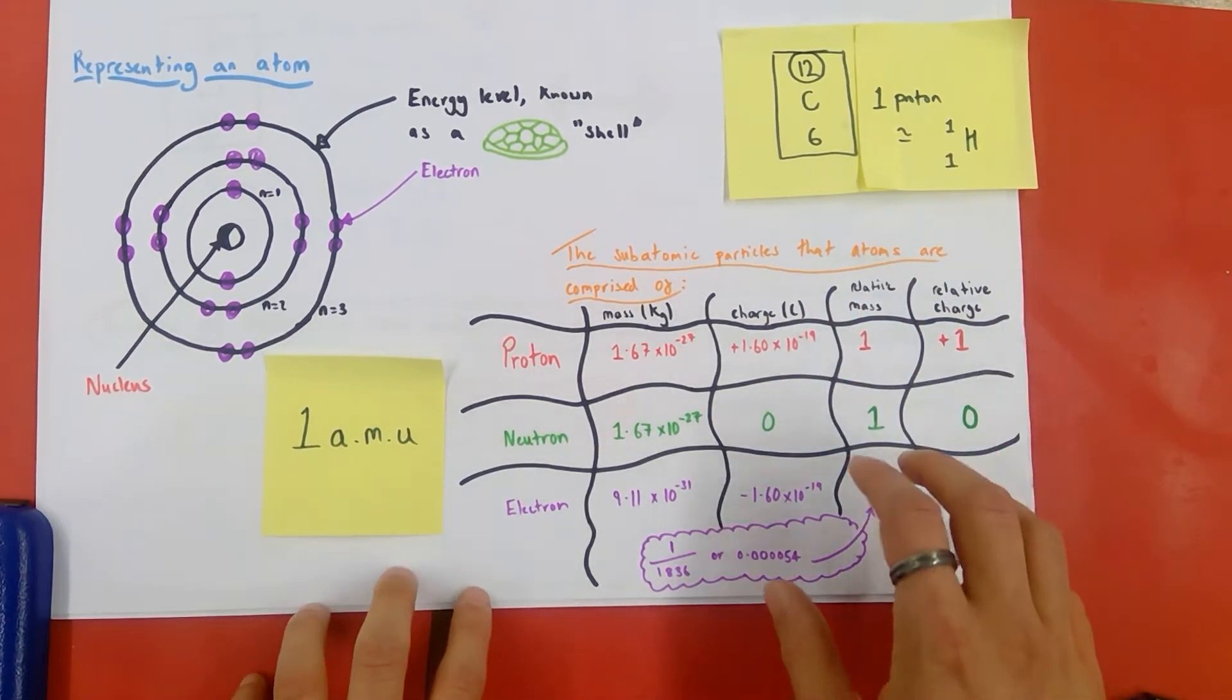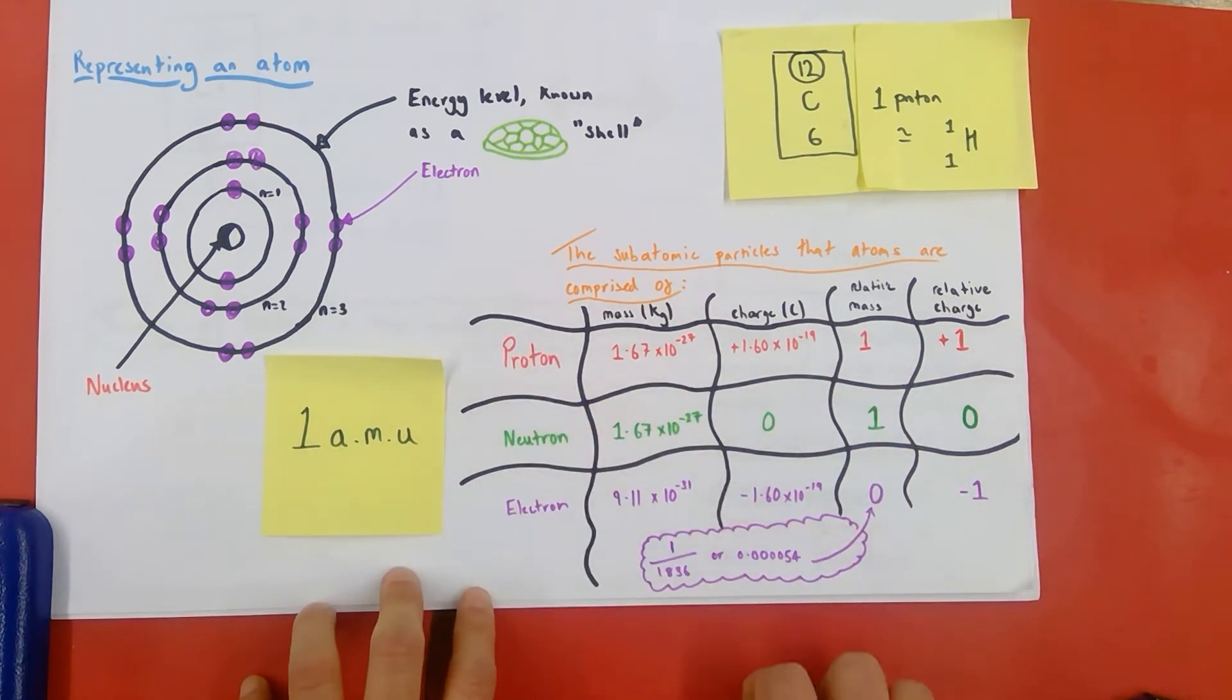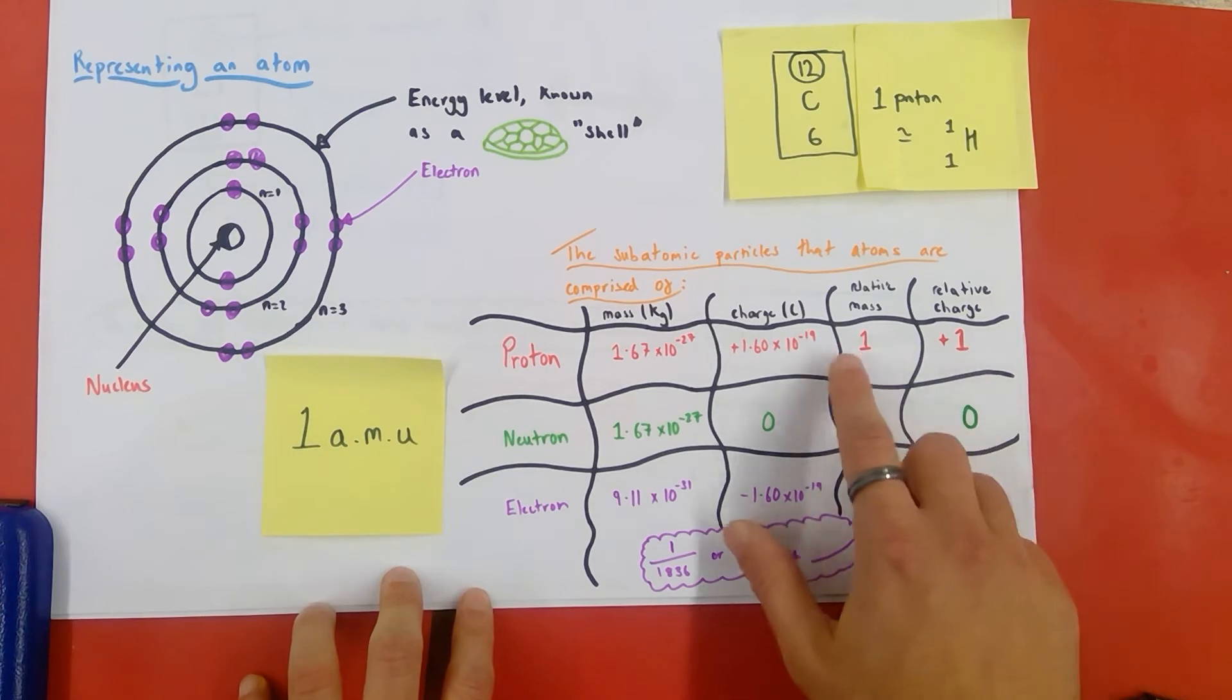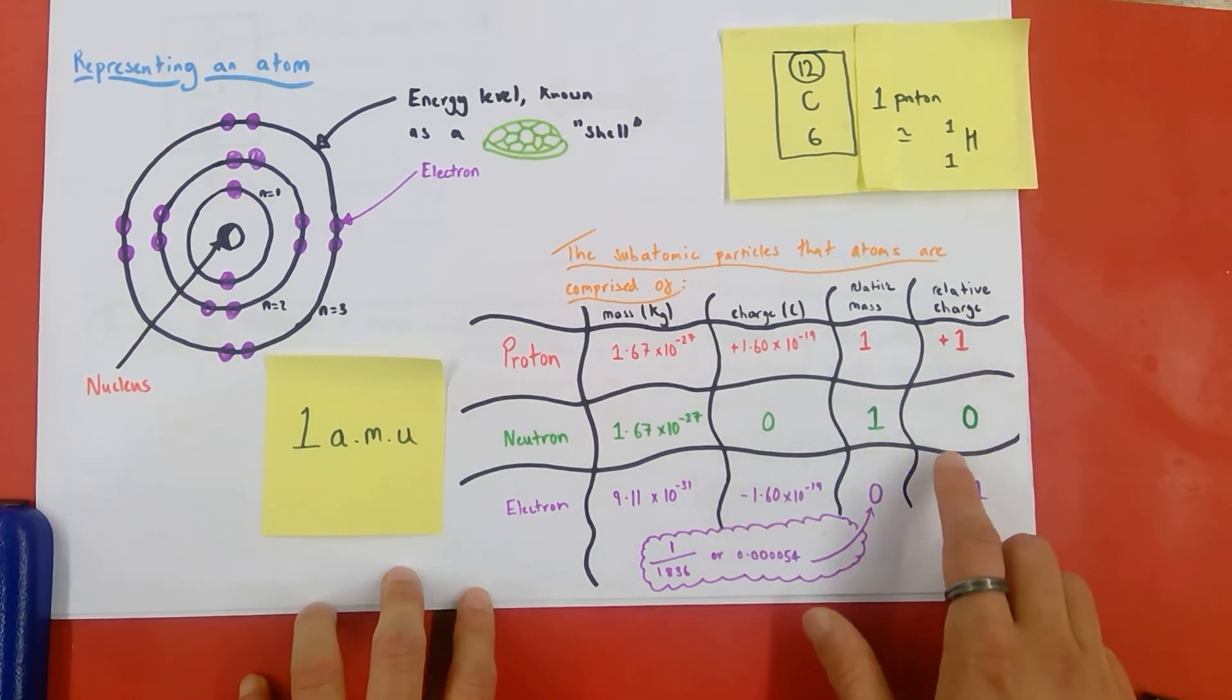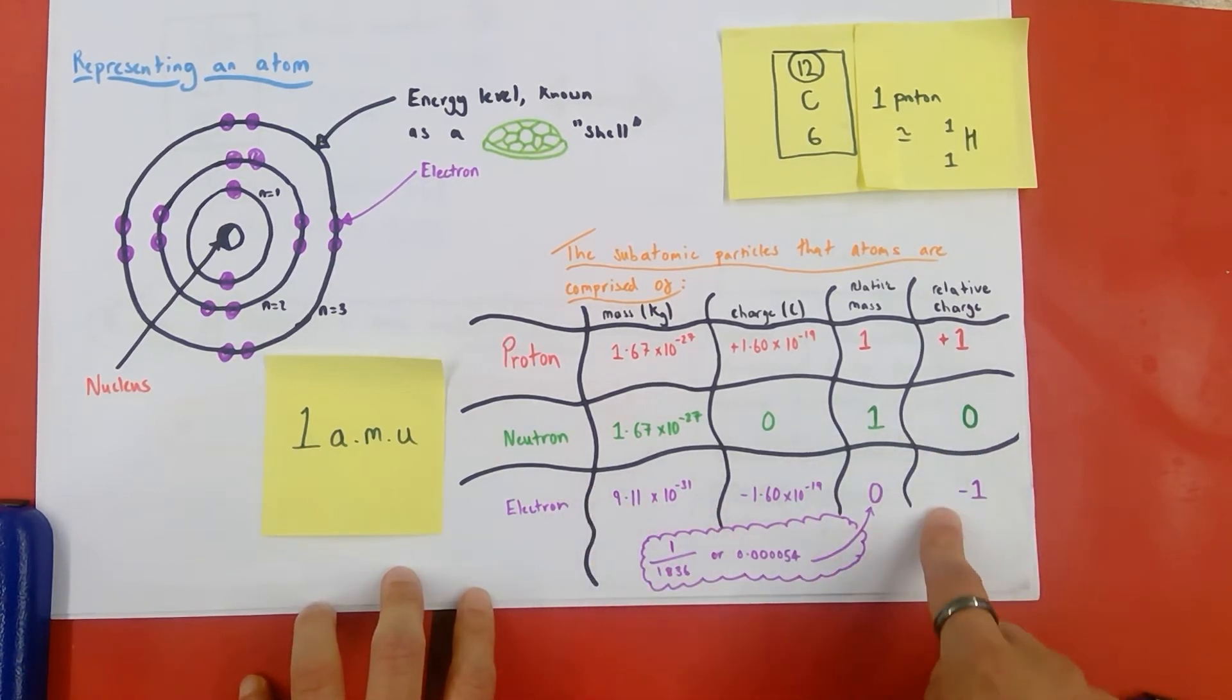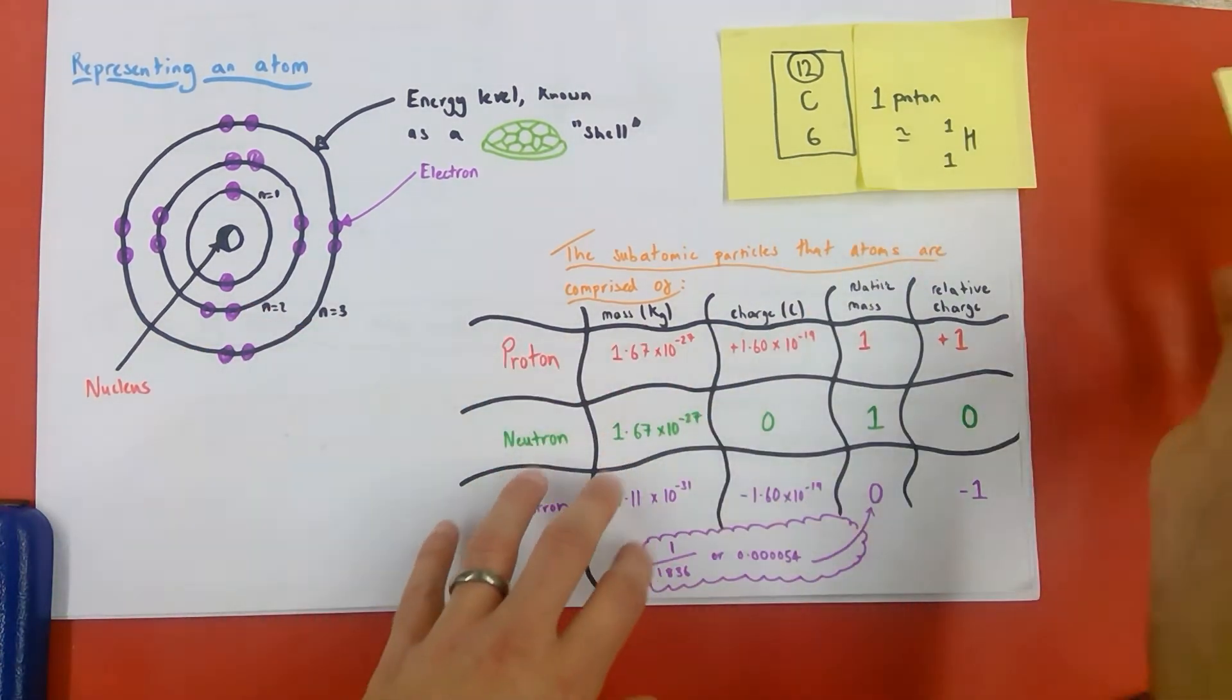So, to summarize this page, guys, there are three subatomic particles in an atom. Protons, neutrons, and electrons. Protons are positive and have a relative mass of 1 atomic mass unit. Neutrons are neutral but have a mass of 1 atomic mass unit. And electrons are negatively charged, 1 minus, but have almost no mass, relative mass at all.